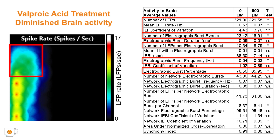No difference was observed in electrographic burst duration or inter-electrographic burst event properties, indicating valproic acid decreased LFP propensity but not overt LFP properties. This coincides with reported valproic acid action on glutamatergic excitatory neurons. We were additionally able to measure relative network activity across the brain. Overall, we did not observe broad changes to network activity, but there was a significant decrease in the number of LFPs per network electrographic burst per channel and network ILI coefficient of variation, indicating decreased detection of LFPs across the brain, yet with less variability.